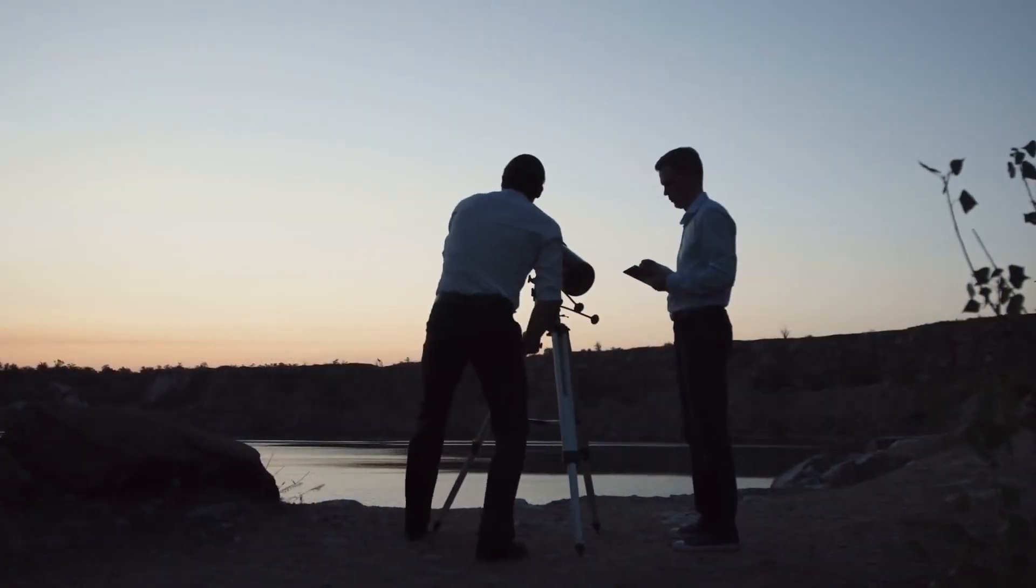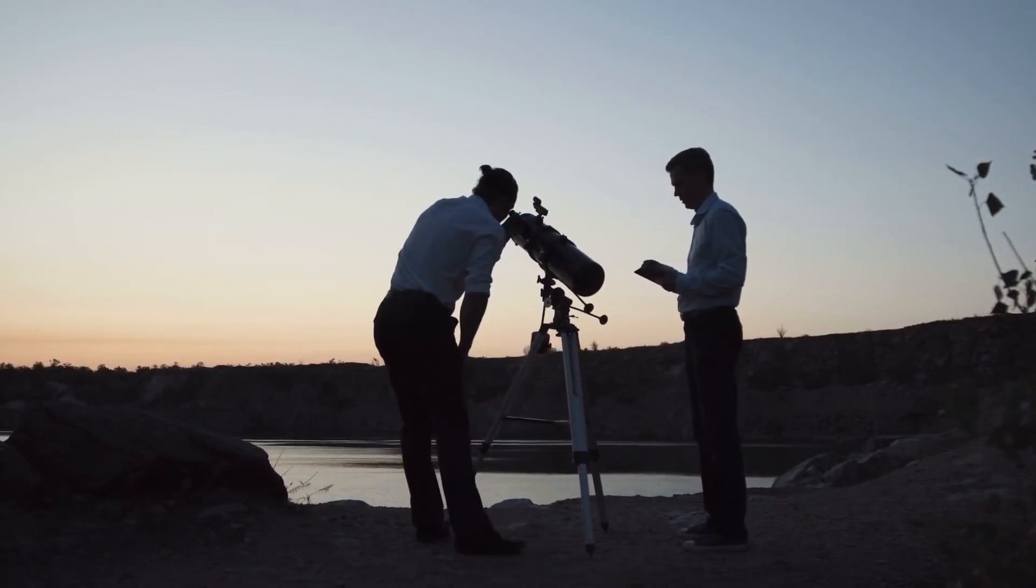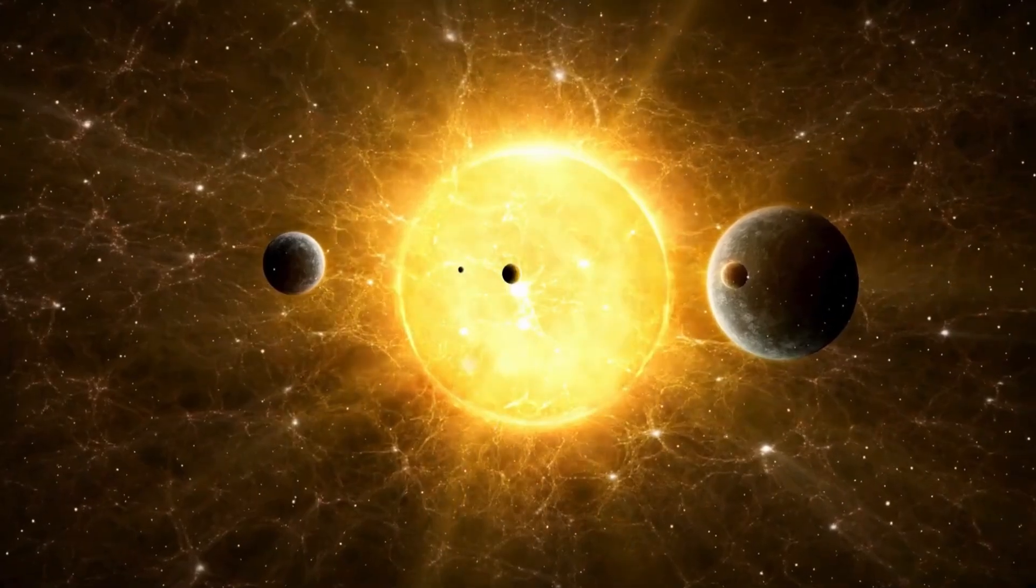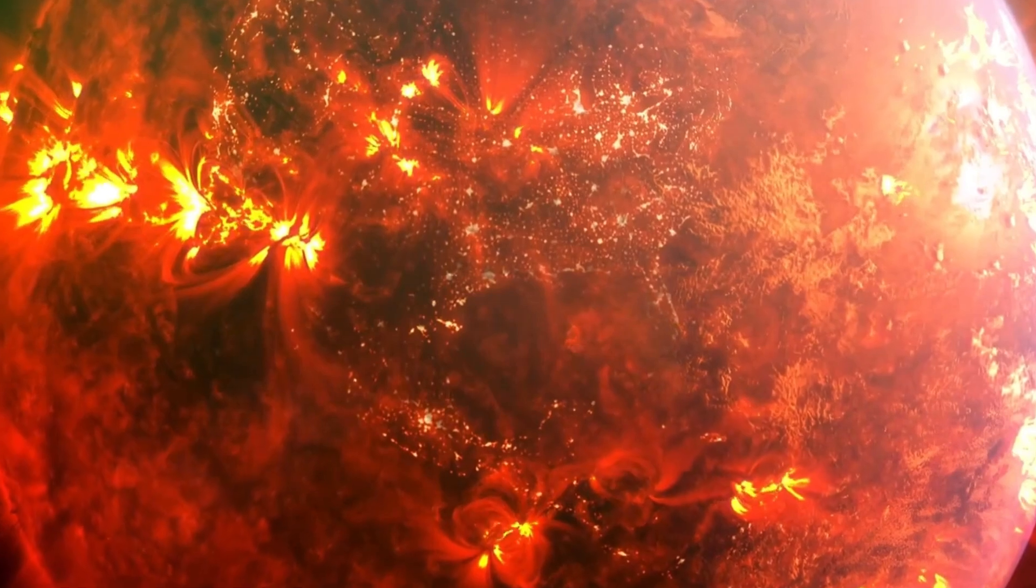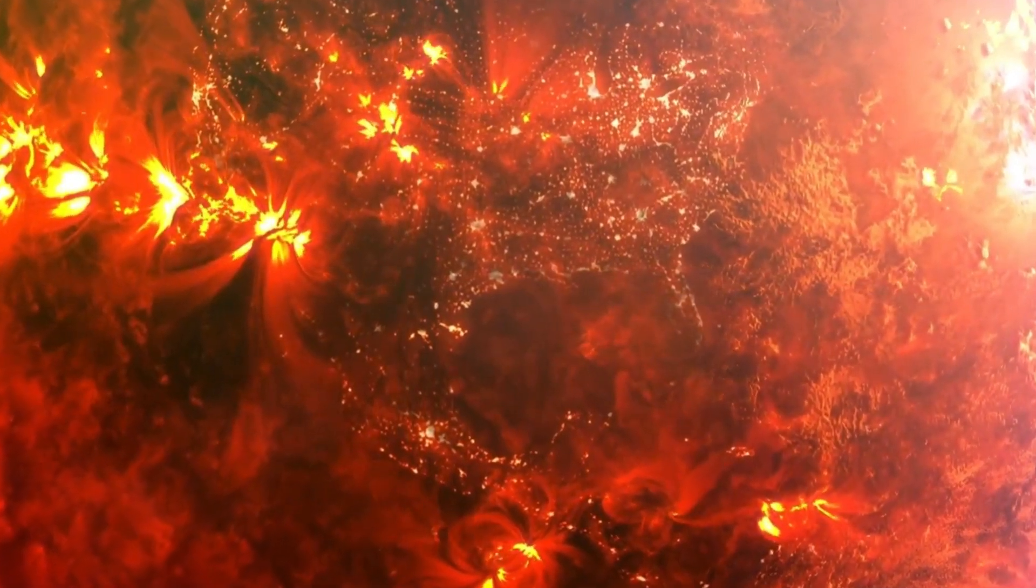However, in this distant orbit, Earth would likely become a frozen, desolate world, stripped of its atmosphere and water, far from the sun's remaining warmth.